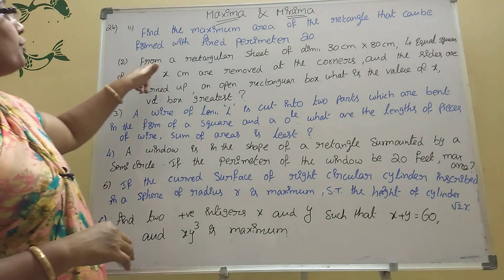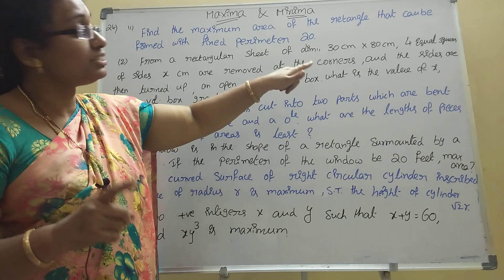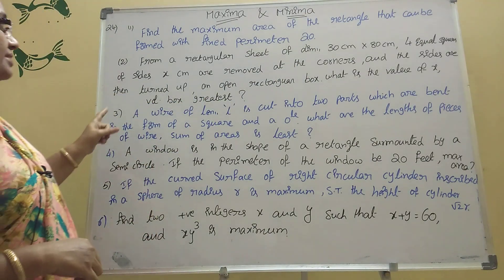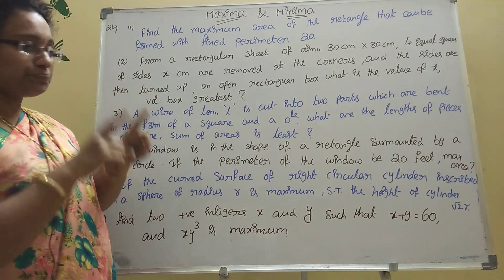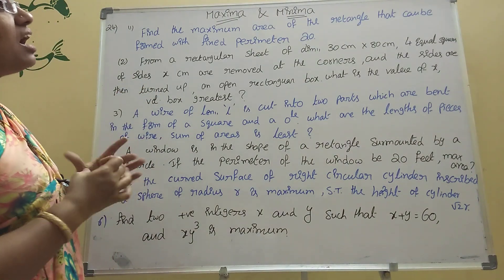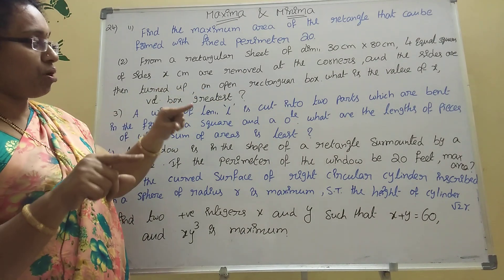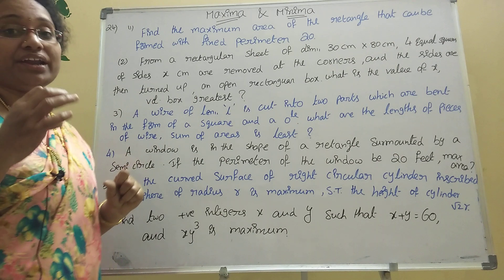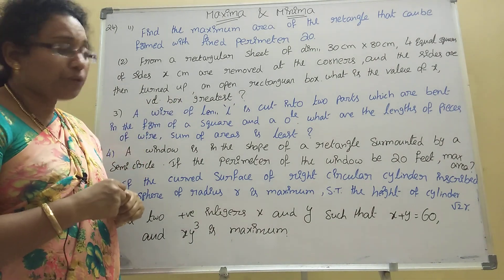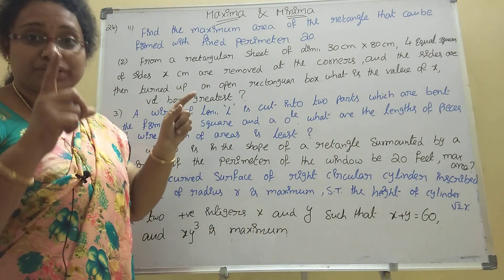Second problem: From a rectangular sheet of dimensions 30 cm × 80 cm, four equal squares of sides x cm are removed at the corners. The sides are turned up to form an open rectangular box. You should find the value of x such that the volume of the box is greatest. This question is given in Telangana 2018, so Telangana students must practice it.